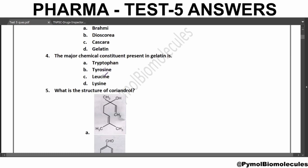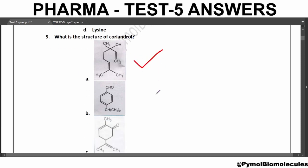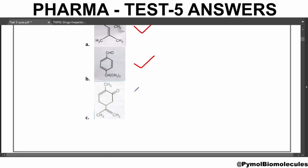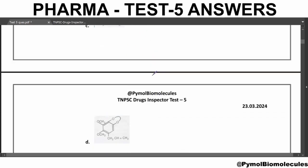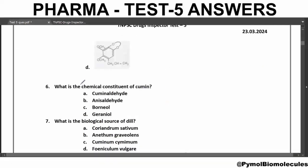What is the structure of Coriandrol? Option B is the structure of Cuminaldehyde. The third option is the structure of Carvone. The fourth option is the structure of Dill-Apiol. The sixth question: what is the chemical constituent of Cumin? Cumin contains Cuminaldehyde.